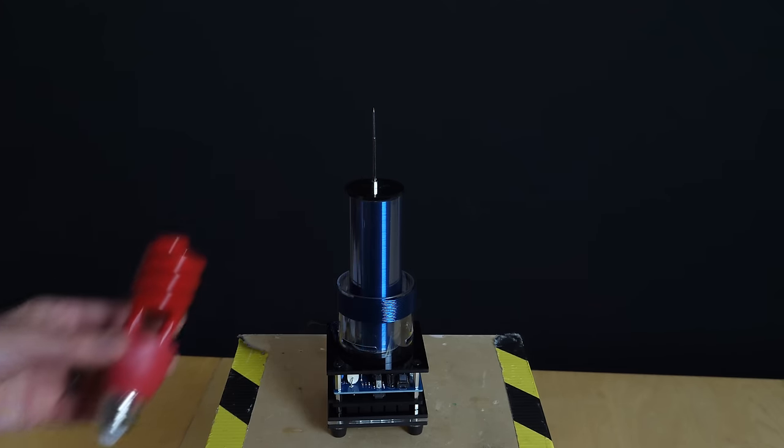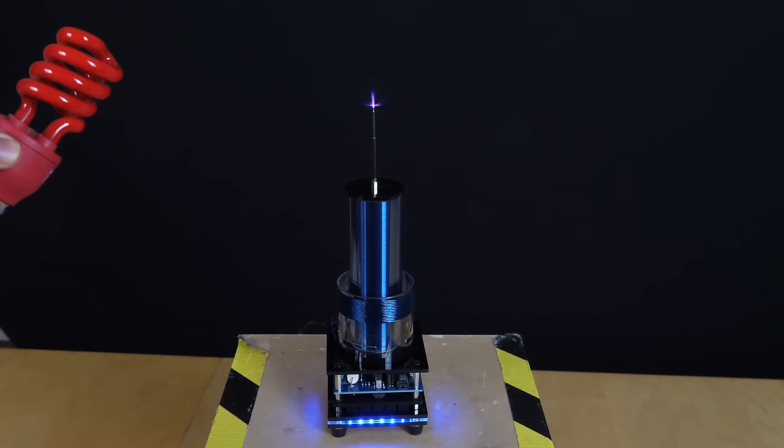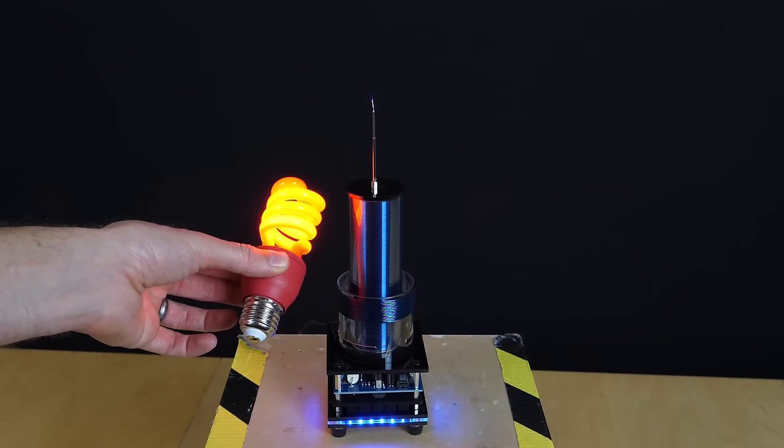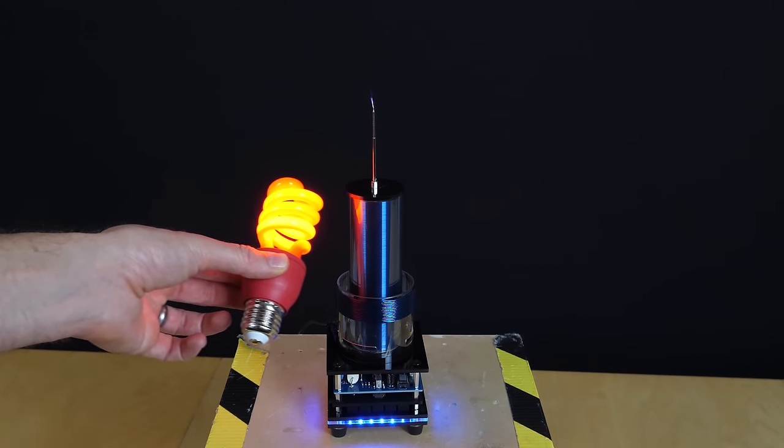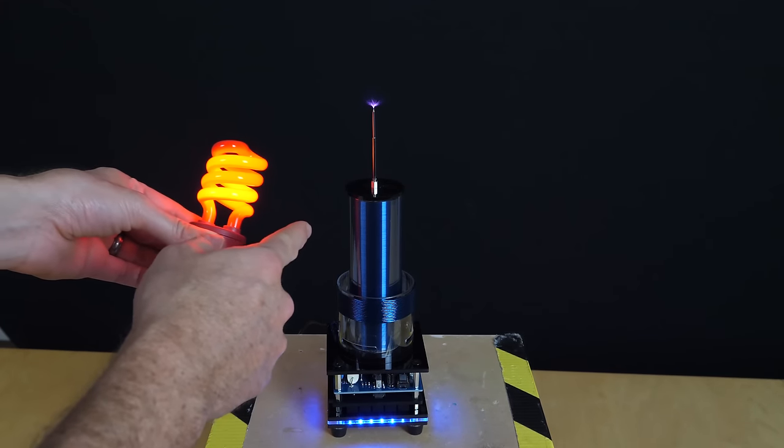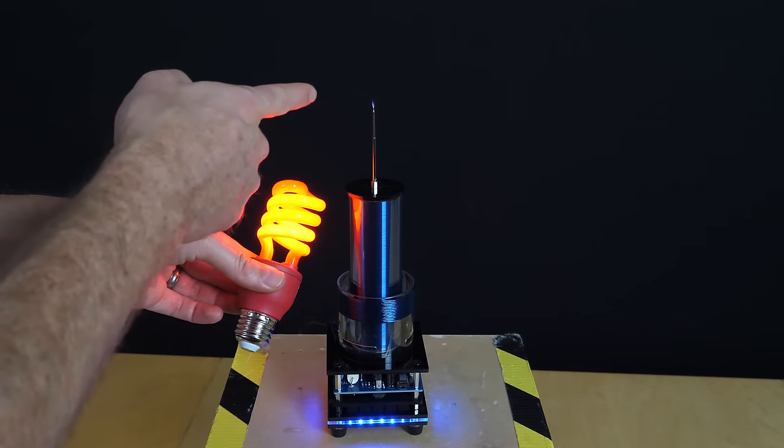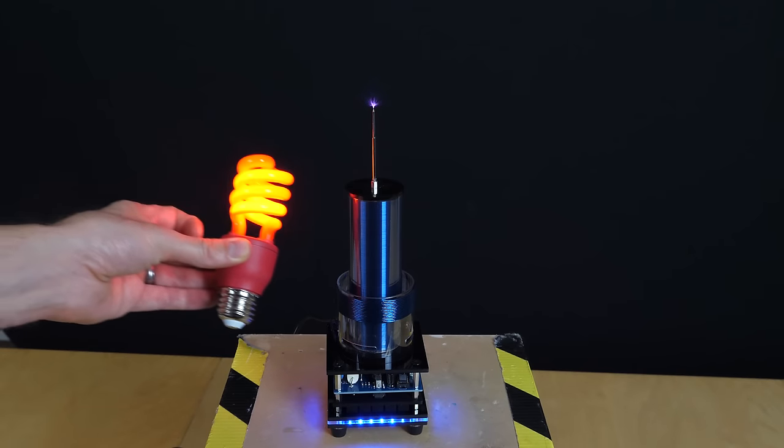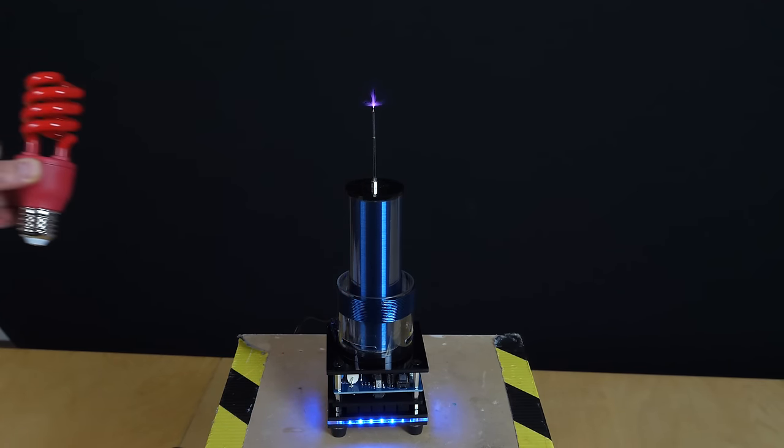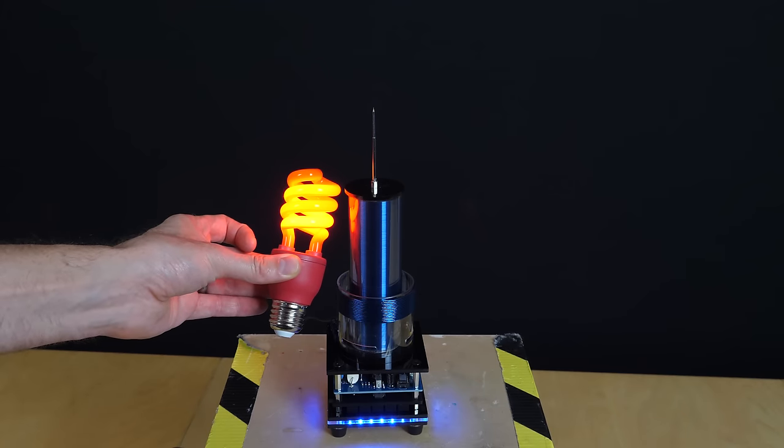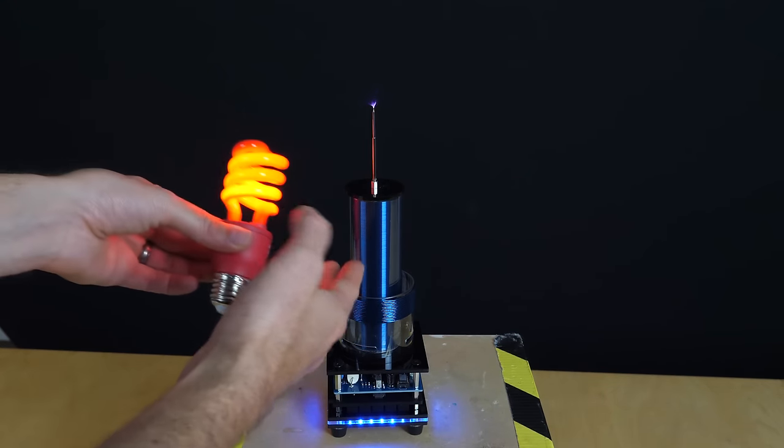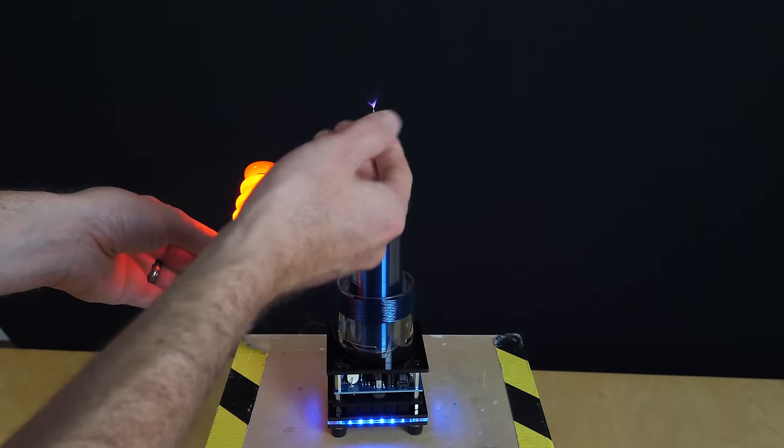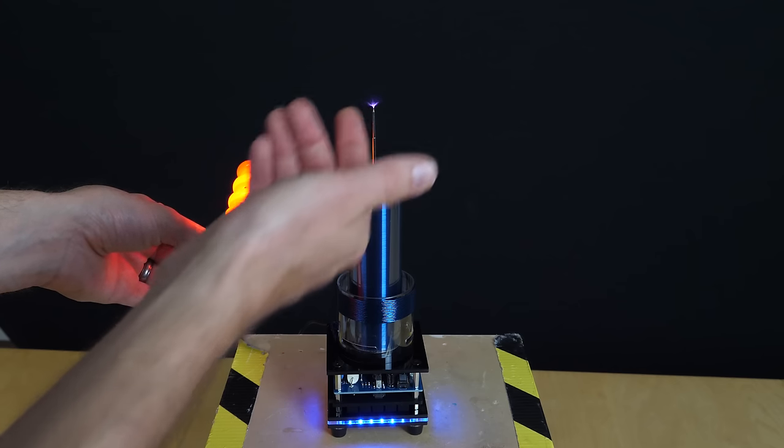For example, this light bulb here. So you can see that when I bring this close to it, it powers up. And the closer I get to it, the more it powers up. And what's interesting, you'll notice that when I bring it near it, the spark at the top goes away. So this isn't free energy at all. I'm actually taking away the energy that is just getting discharged through the top there.